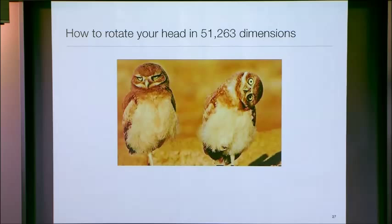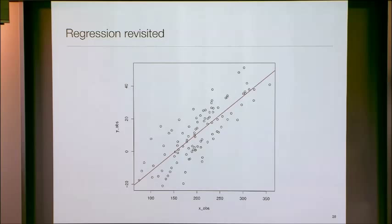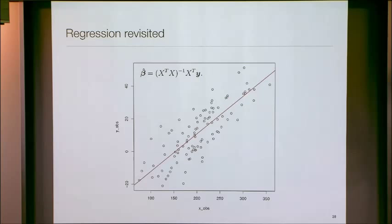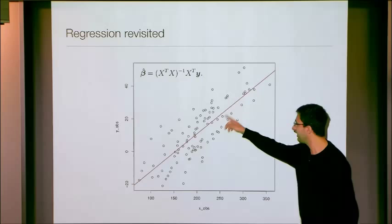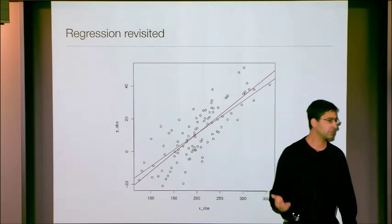To understand what I'm going to explain, I need to start with the very basics and revisit regression. Everybody here has taken data, plotted a line through it, plotted a regression line. But the way people sometimes do regression, they just plug into a formula. What you're actually doing is you have a model — the black line — and you believe your data is a linear function of your x values plus some Gaussian noise. You're optimizing the likelihood function within that framework to find the red line.